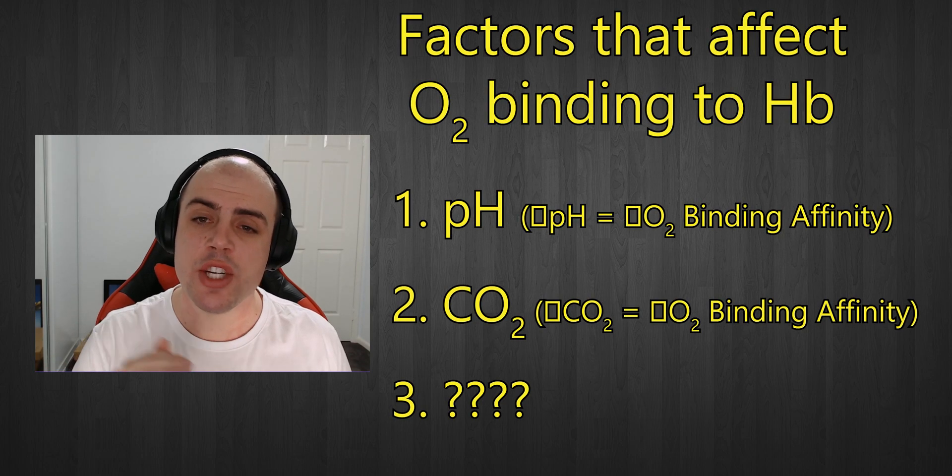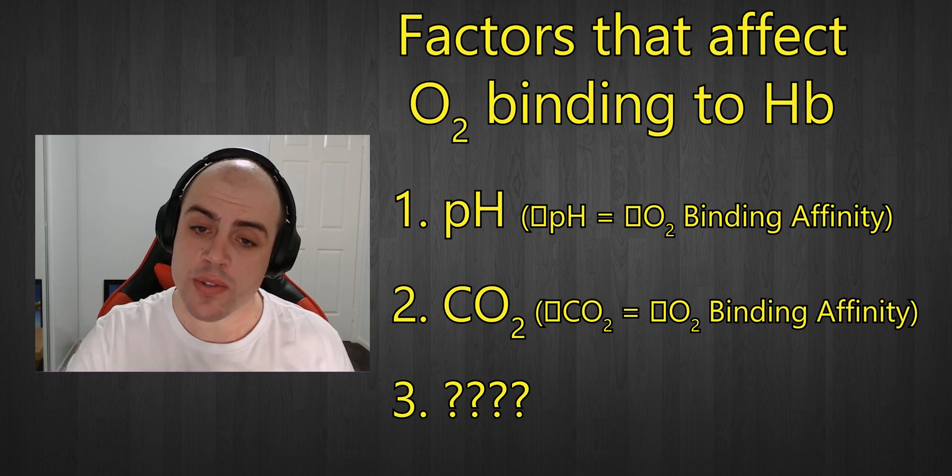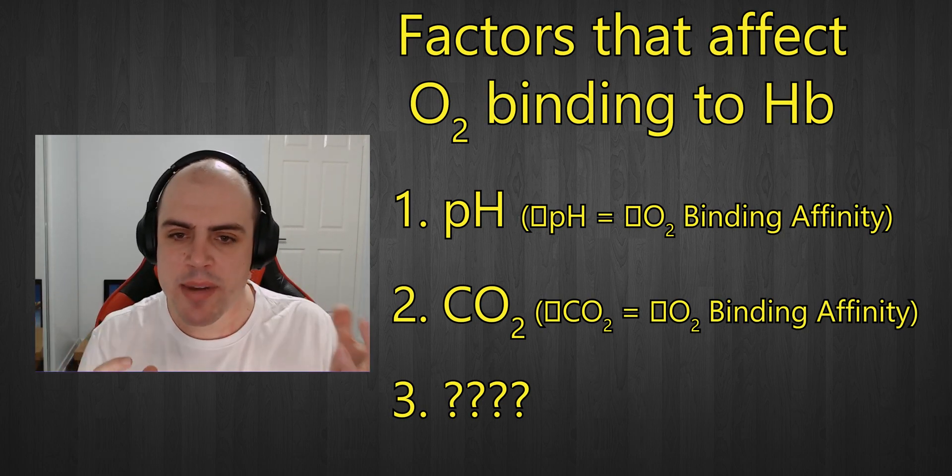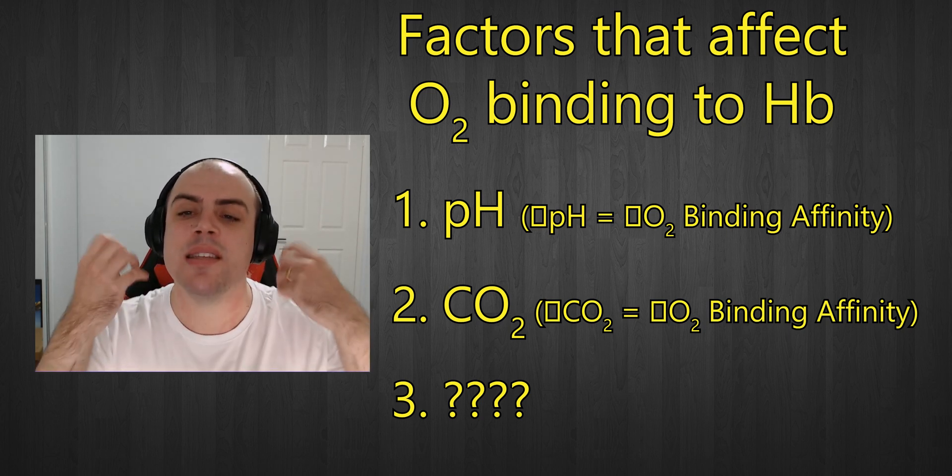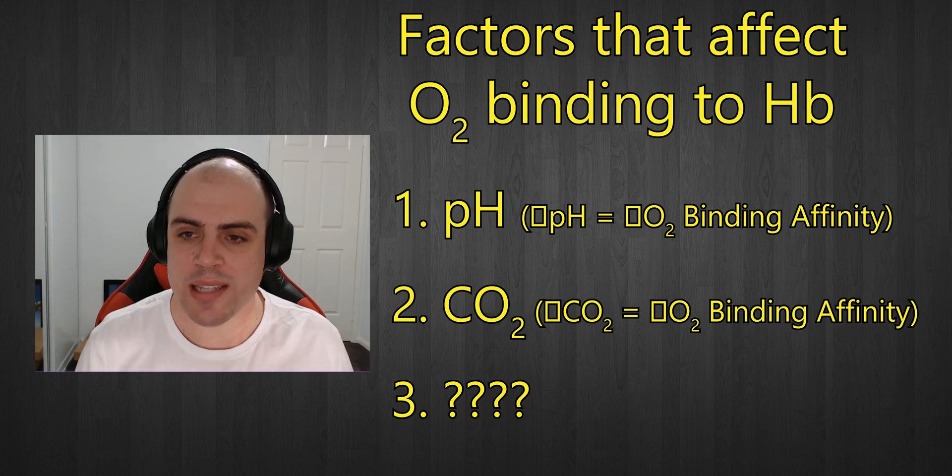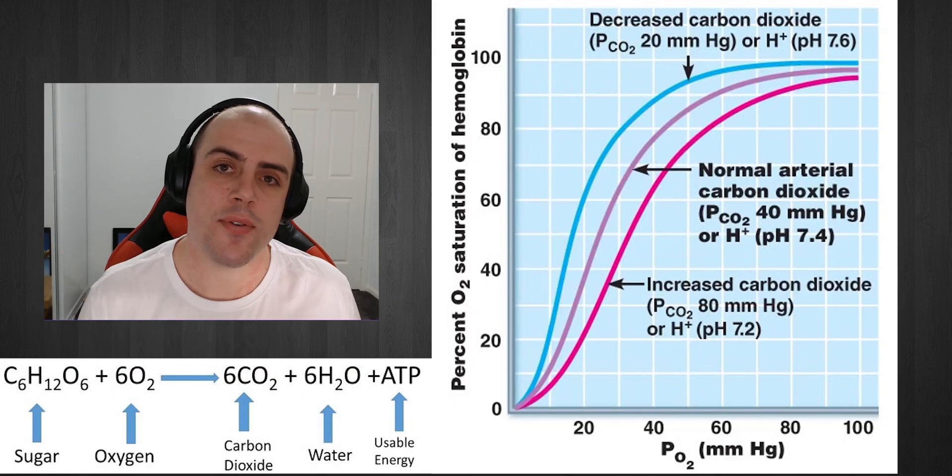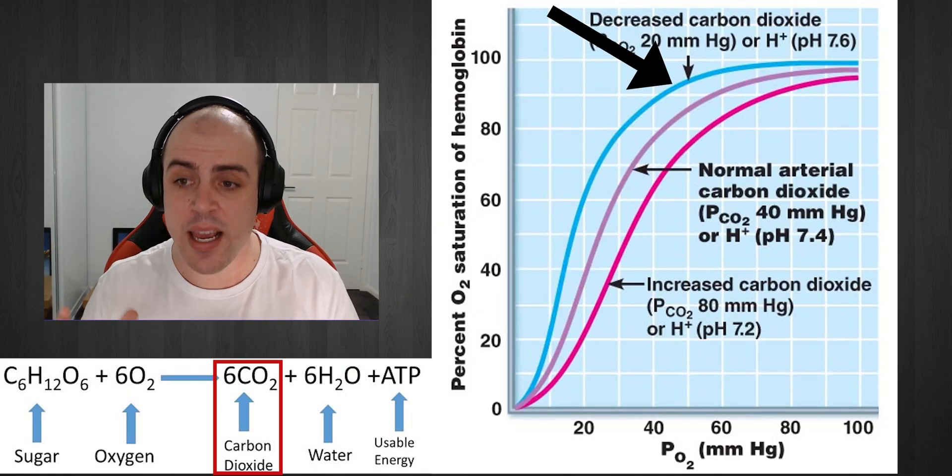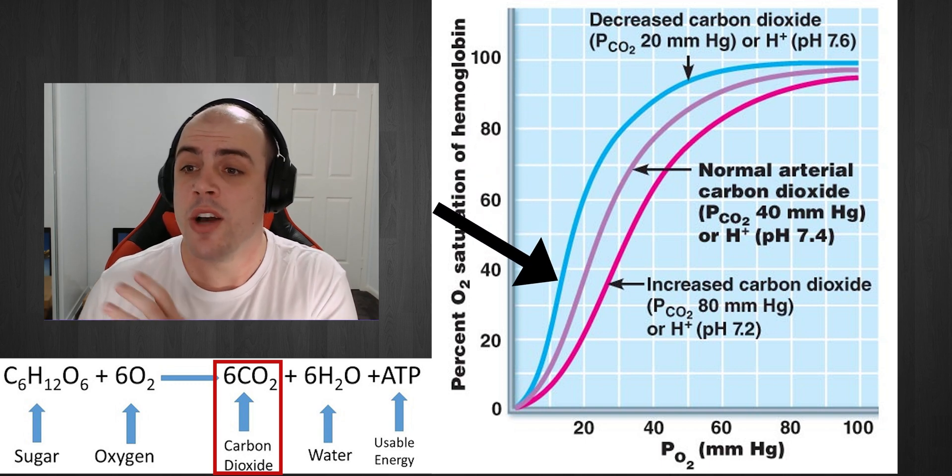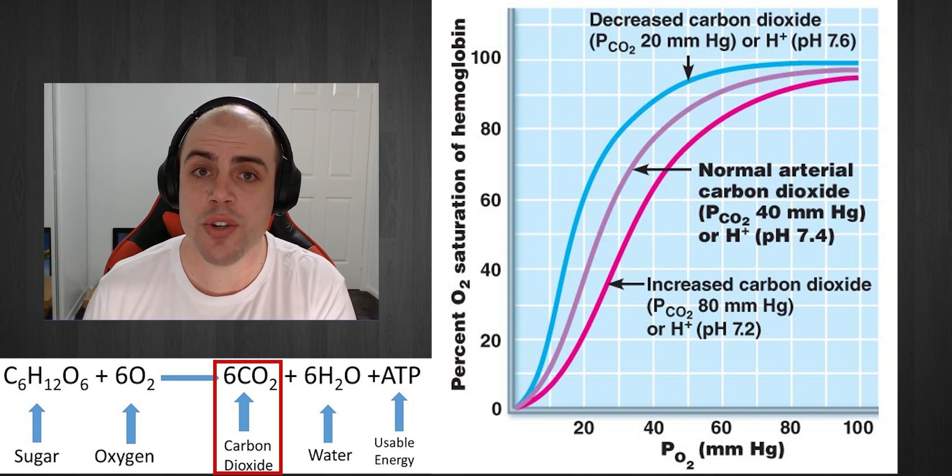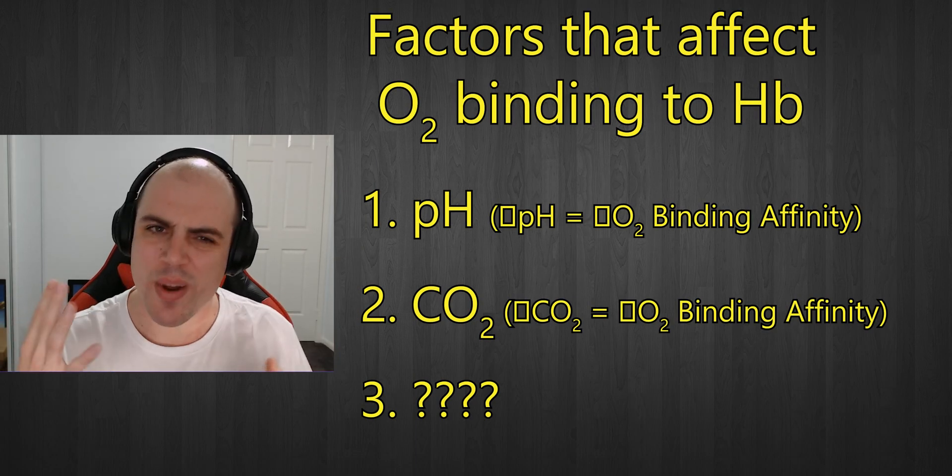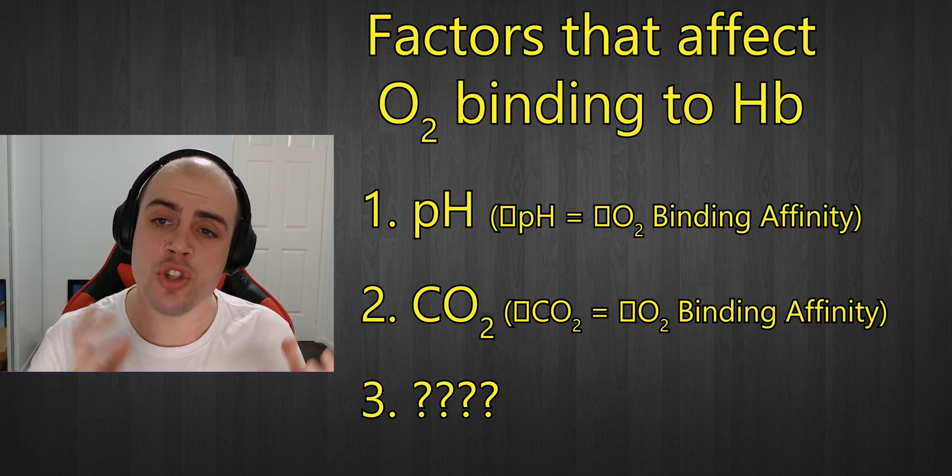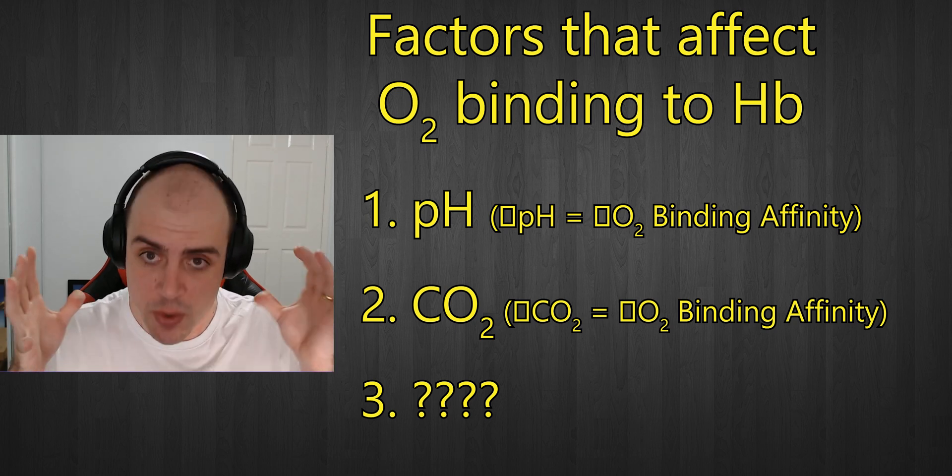In other words, as the concentration of carbon dioxide goes up, the ability for hemoglobin to hold on to oxygen will decrease and increase the amount of oxygen delivery to that tissue, which works perfectly for us because generally if we see an increase in carbon dioxide production for a particular tissue, it means it's doing a lot of work.